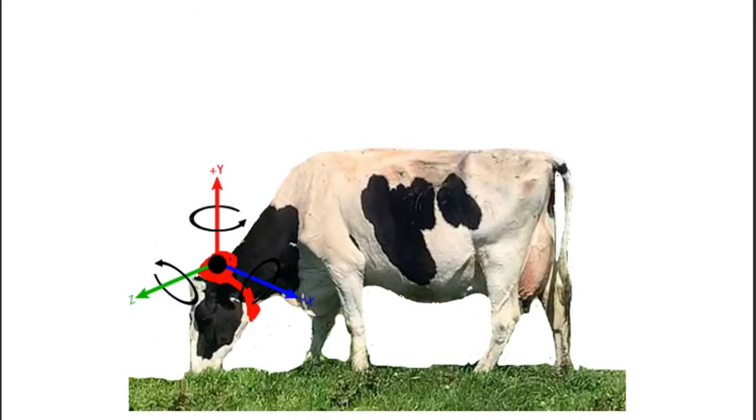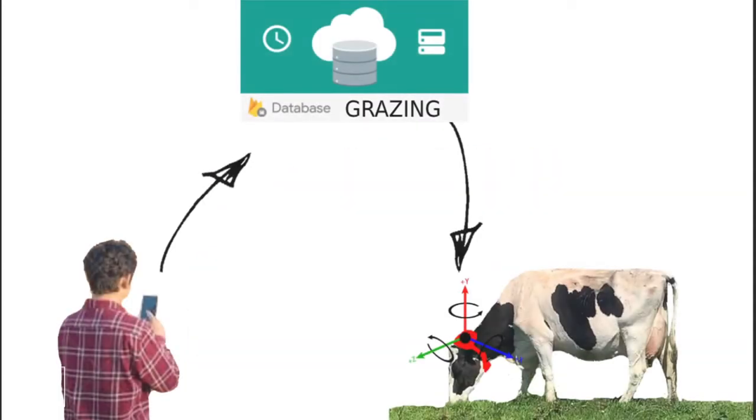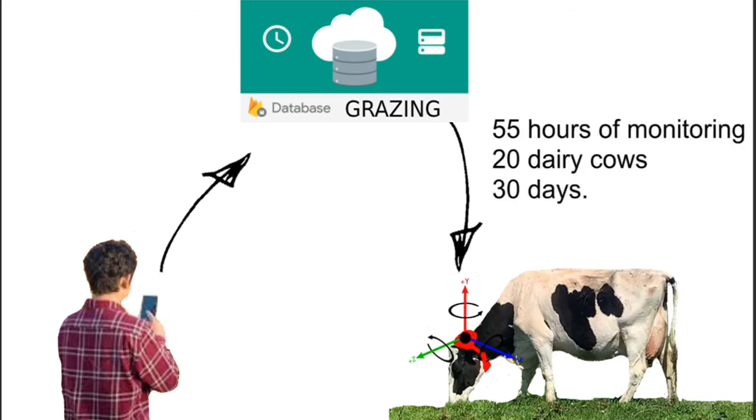An Android smartphone was placed on the back side of the cow's head. Every 100 milliseconds, this device records the smartphone's three axis accelerometer values and its corresponding activity. To define activity changes, an observer uses another smartphone to send the current activity to a cloud database, and this activity record can be read immediately by the smartphone on the cow. The text file obtained with this process contains 55 hours of monitoring of 20 dairy cows for 30 days.